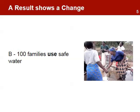Sentence B reflects a project result at the outcome level. Note the use of the word 'use,' as compared to the word 'construction' in Sentence A. Sentence A shows an action, while Sentence B shows a change. This distinction is important, as it tells us that something has changed — a change in condition that can be attributed to the project.